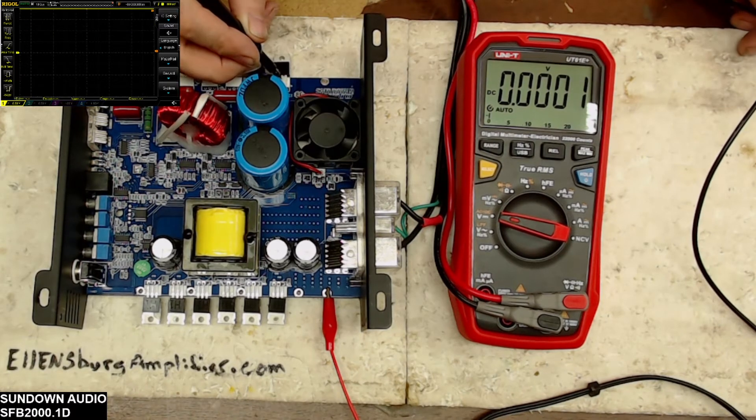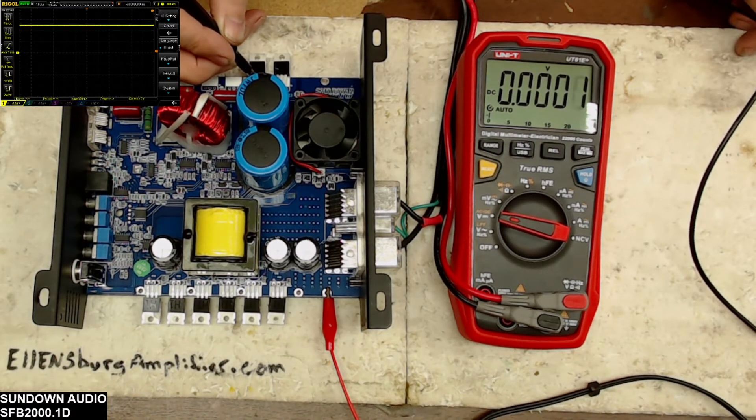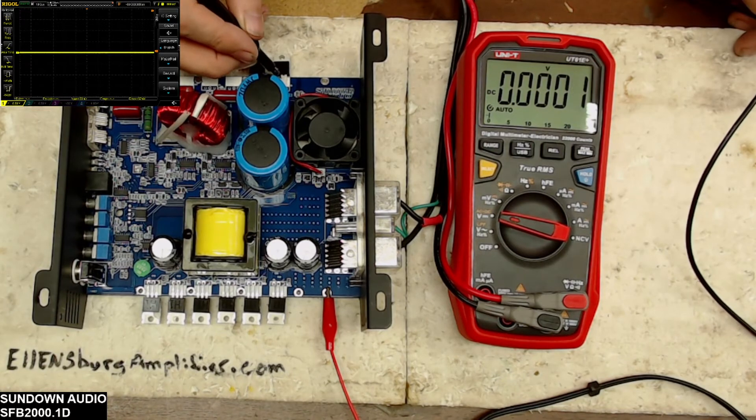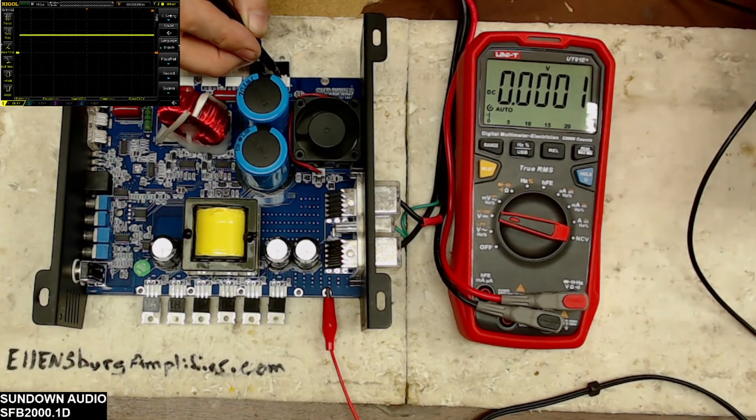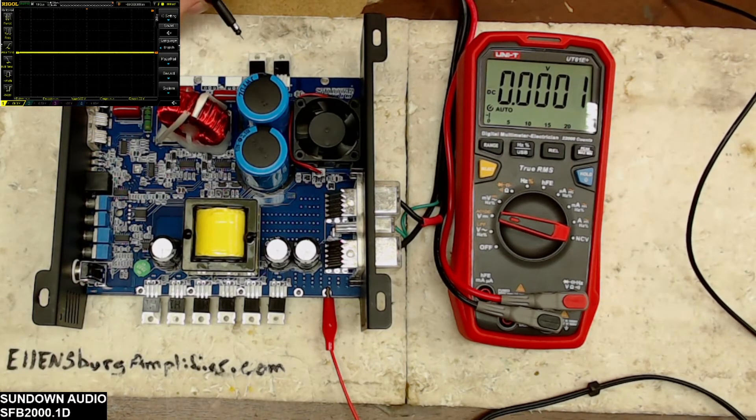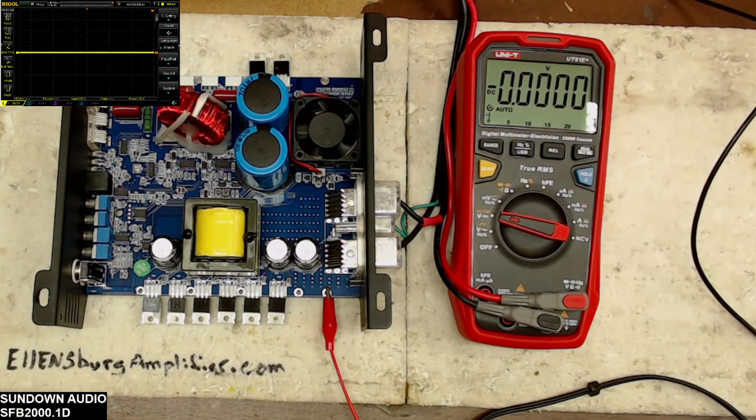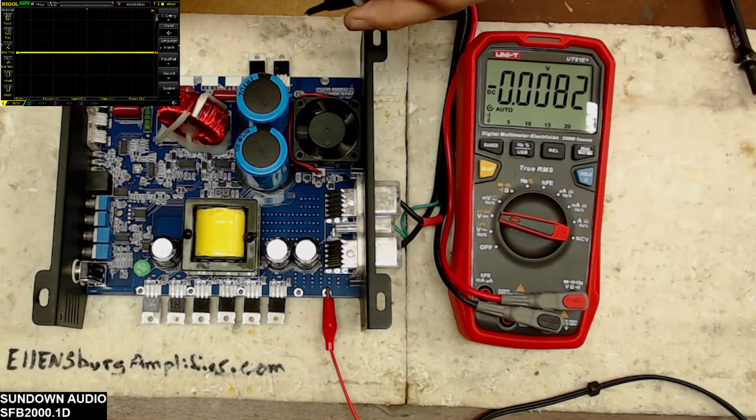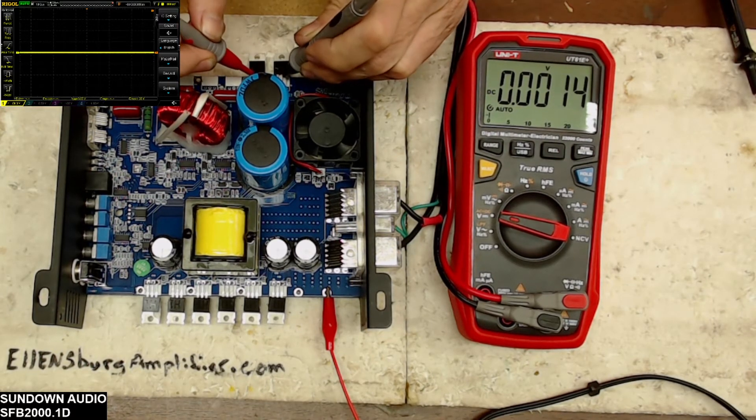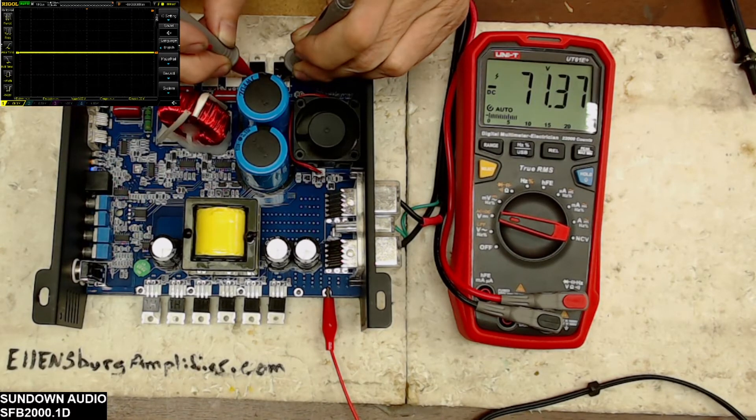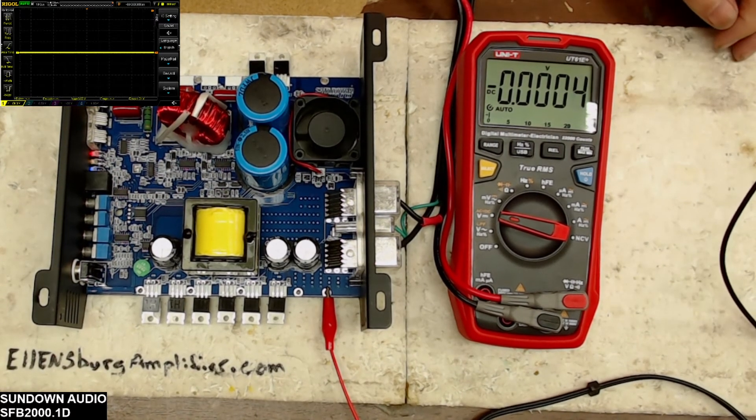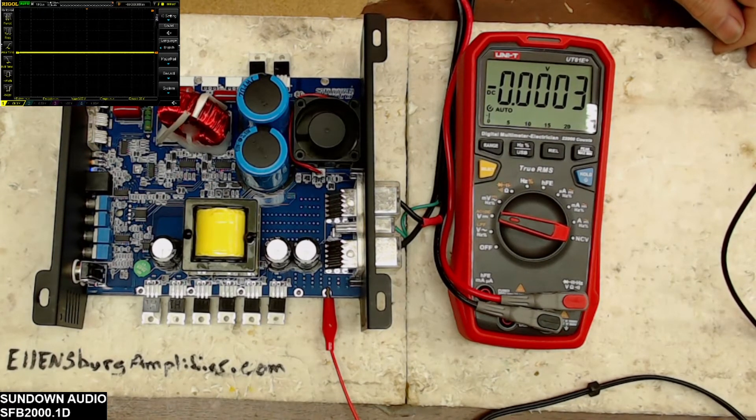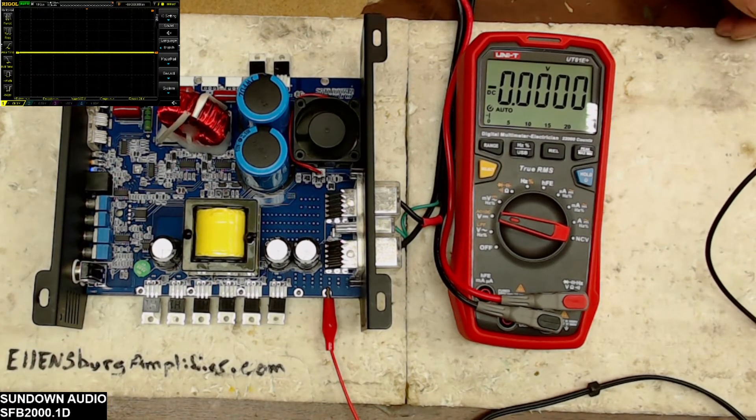You can see just by touching the foot pedal I'm already getting upwards of about 80 volts. Yeah, upwards of about 80 volts here. Let me see what I got across the rail here. So it is 71 volts on the rails there.